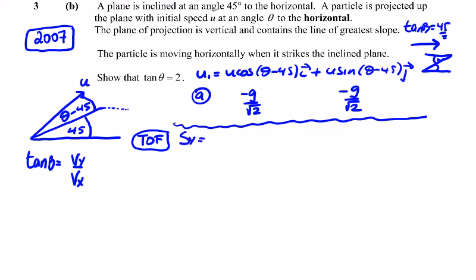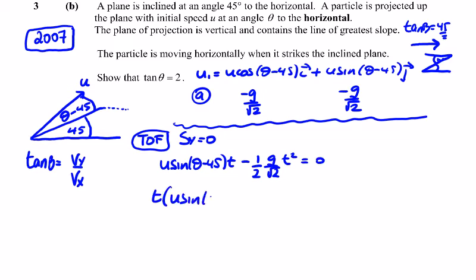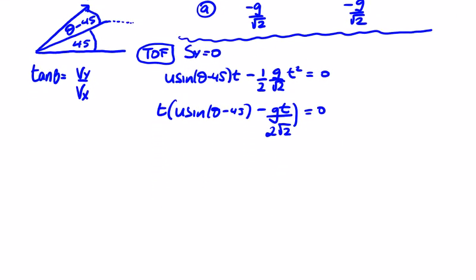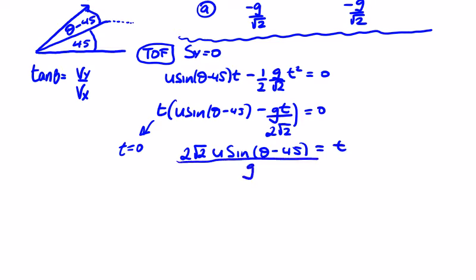Setting s_y equal to 0: u sin(θ-45)·t plus half·a·t² = 0, putting in the minus, so minus half·(g/√2)·t² = 0. Factoring out t leaves u sin(θ-45) minus g·t over 2√2 = 0. So t = 0 initially, and then 2√2·u sin(θ-45) = g·t, giving t = 2√2·u sin(θ-45) / g. That's the time of flight.